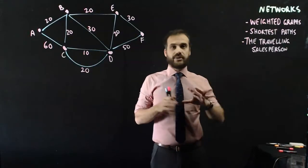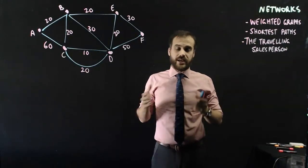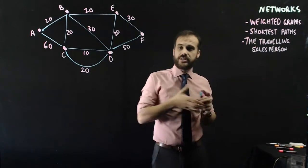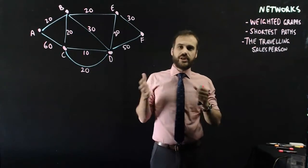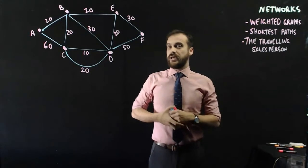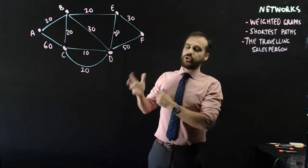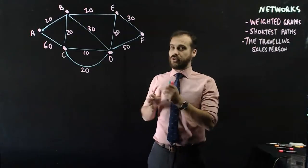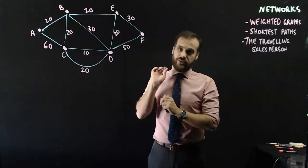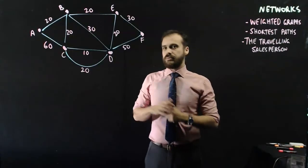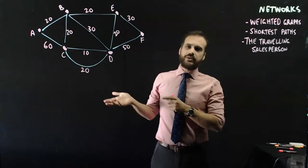Now, in terms of thinking about shortest paths, when we talked about Hamiltonian, semi-Hamiltonian, we said there's no really good ways to go about it. In the same way, when it comes to shortest path, there's no shortcuts here. You've really got to trial and error this and look at it and puzzle your way through it.